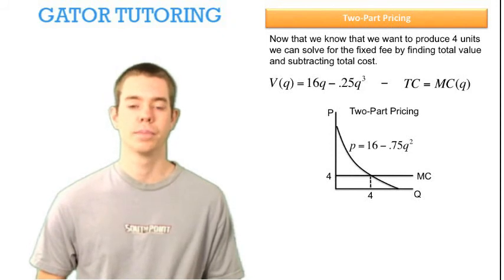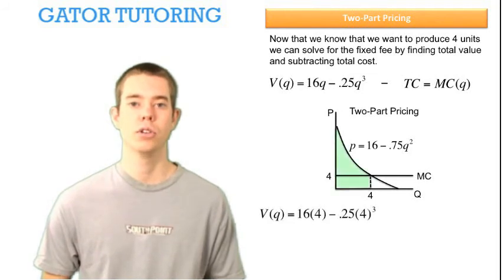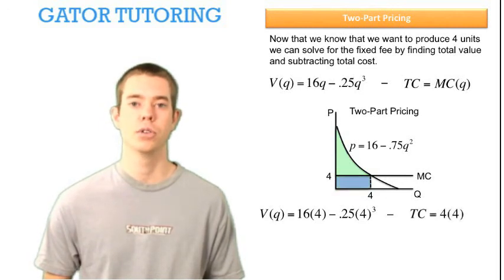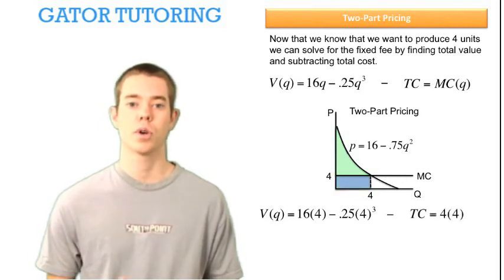Graphically, let's show you what we're doing. We're still going to find that area of the triangle, except for it's not going to be a triangle. When we find total value at 4 units, we find the area of this green shape. When we find total cost at 4 units, and we're subtracting it, we're subtracting away the area of this blue rectangle.